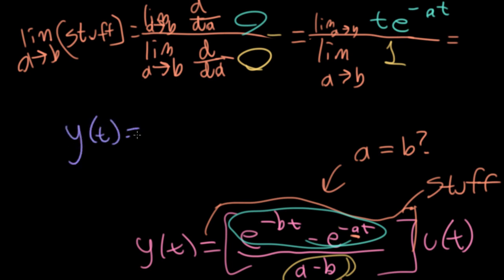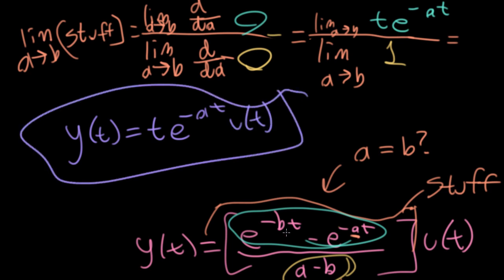For the special case in this example of a equals b, the answer is going to be y of t is equal to t e minus a t u of t. So that's just for this special case, because otherwise this guy is weird.